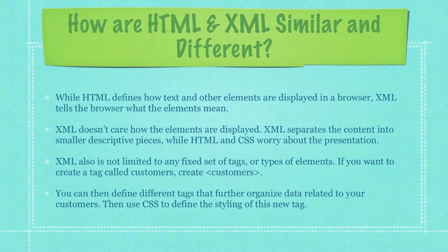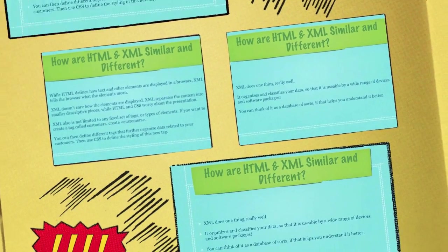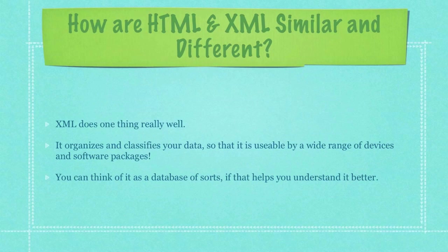XML separates the content into smaller descriptive pieces while HTML and CSS worry about the presentation. XML also is not limited to any fixed set of tags or types of elements. If you want to create a tag called customers, just create a customer tag. You can then define different tags that further organize data related to your customers, then use CSS to define the styling of this new tag. XML does one thing really well — it organizes and classifies your data so that it is usable by a wide range of devices and software packages. You can think of it as a database of sorts if that helps you understand it better.